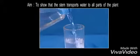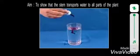To show that the stem transports water to all parts of the plant, we will take some water in a glass tumbler and put five to six drops of red ink in it. As you see, the ink gets evenly diffused in the water. Now we dip a branch of balsam plant in the colored water.